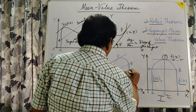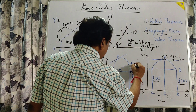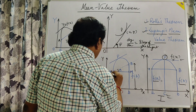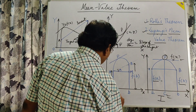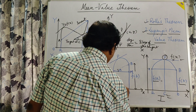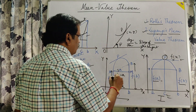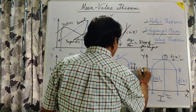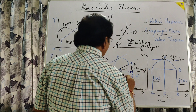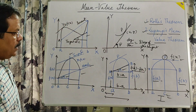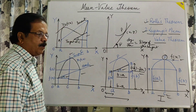tan(alpha) equals BM upon AM — perpendicular upon base. This value is f(b) and this value is f(a) on the Y axis, and here a and b are on the X axis, so this value is b minus a. So BM equals f(b) minus f(a). Therefore the slope of the line is f(b) minus f(a) upon b minus a, and there exists at least one point c where f'(c) equals f(b) minus f(a) upon b minus a.